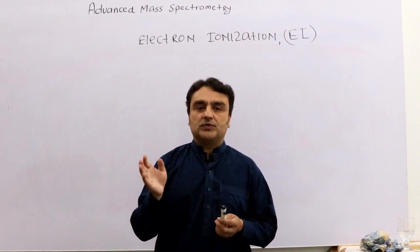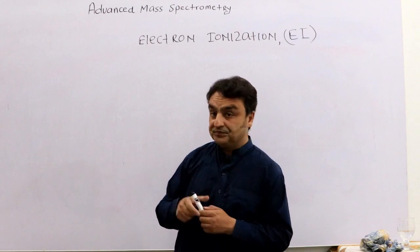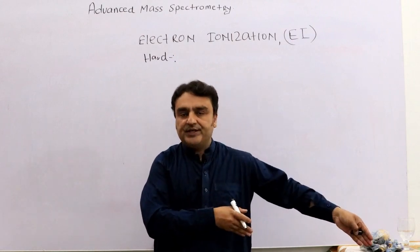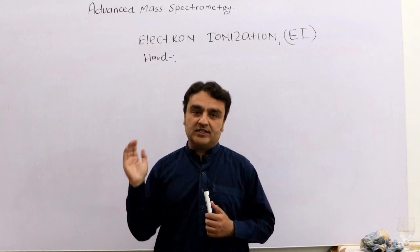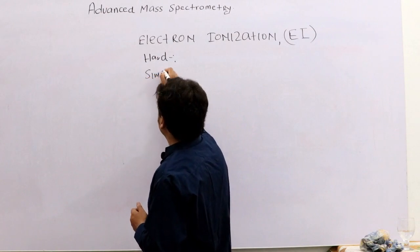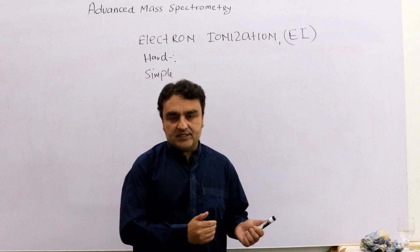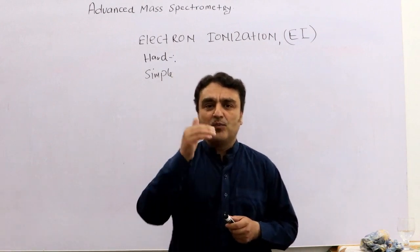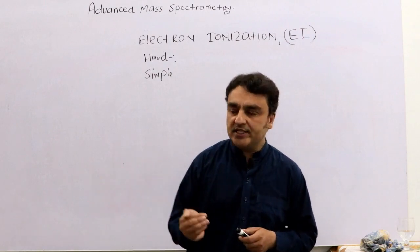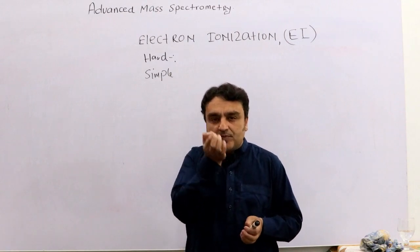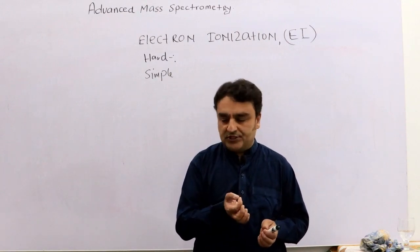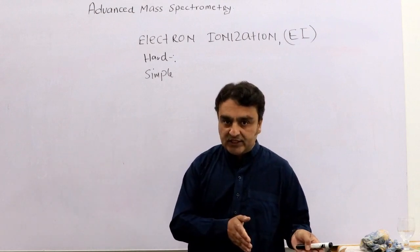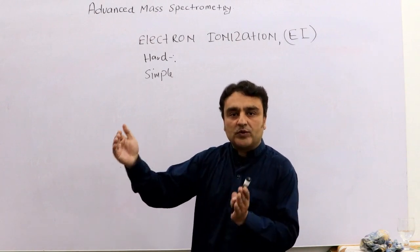Electron ionization, or EI, is a hard ionization technique. Its instrumentation is quite simple. Mass spectrometry is the most sensitive among other spectroscopic techniques, and electron ionization is the simplest among mass spectrometry techniques — it is even more sensitive than its other counterparts.